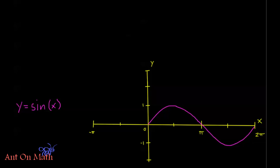Alright, welcome back to AntonMath. In this video we're talking about the general form of our sine and cosine equations when we're talking about graphing these equations. We're also going to be talking about the last kind of transformation, and that's the horizontal shift. So first let me write out the general form of these equations.